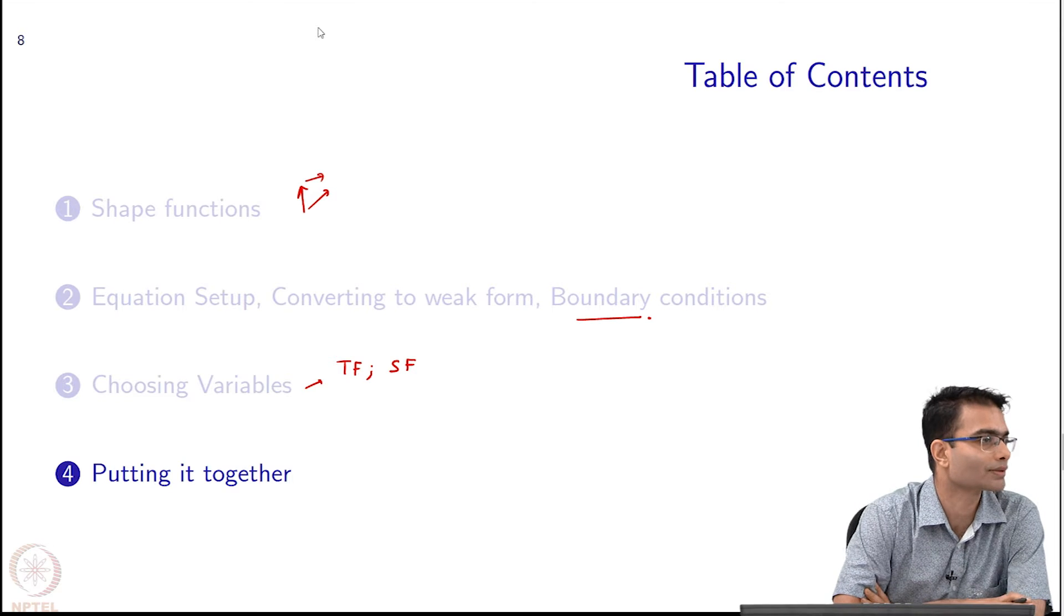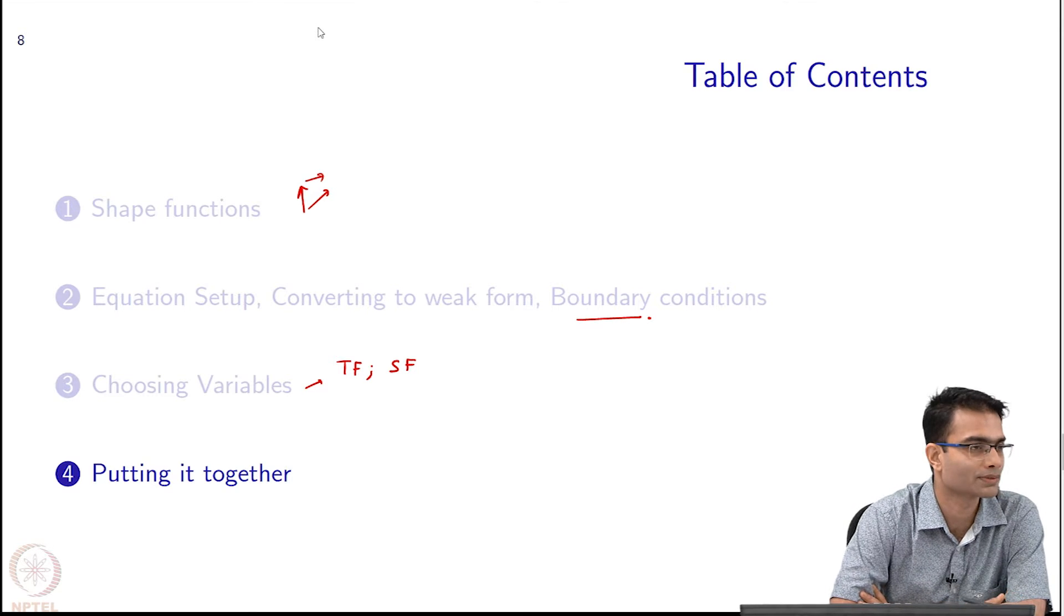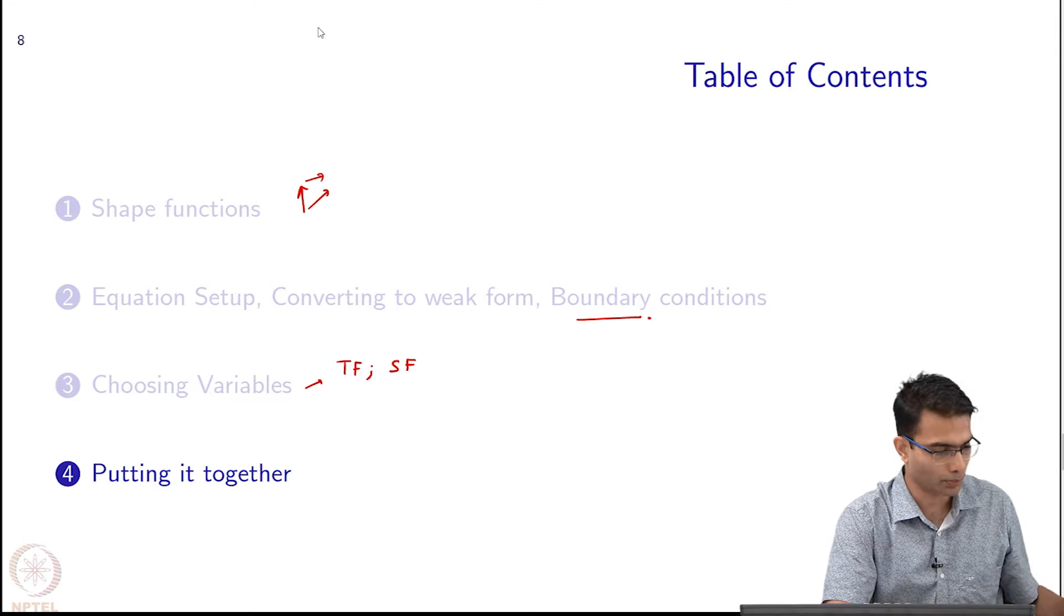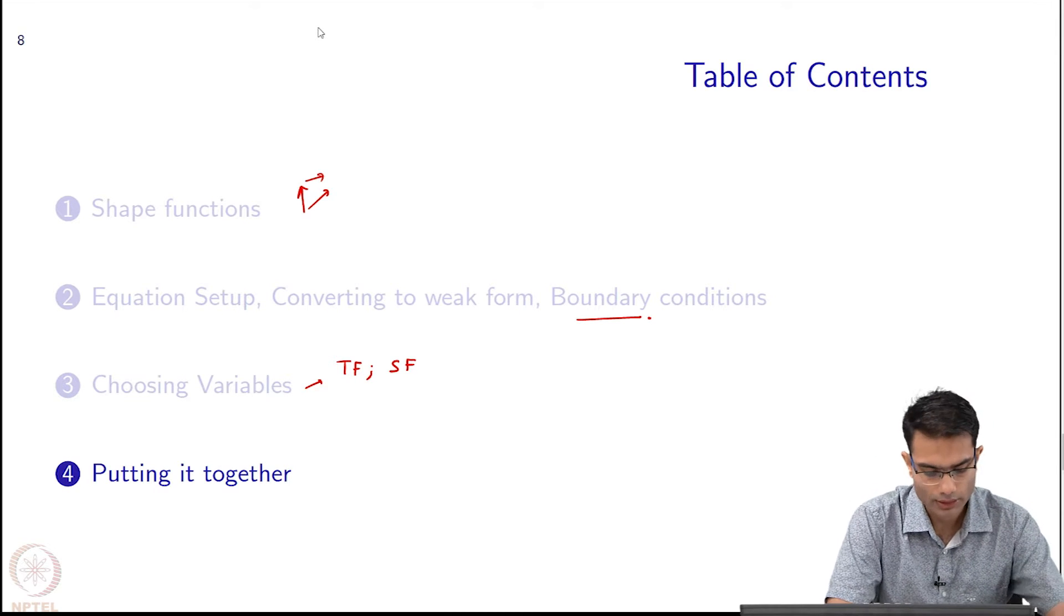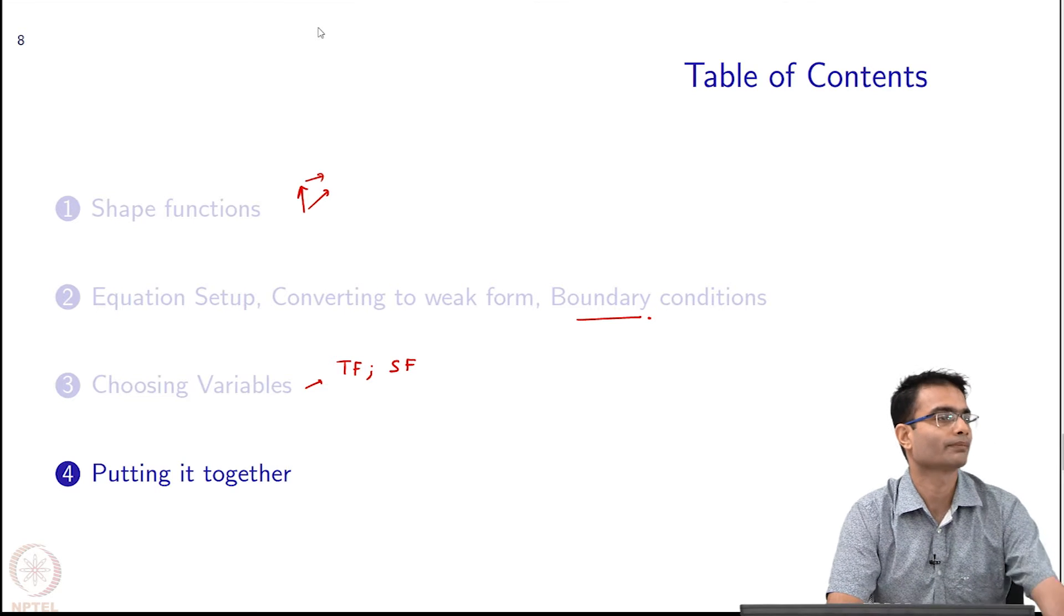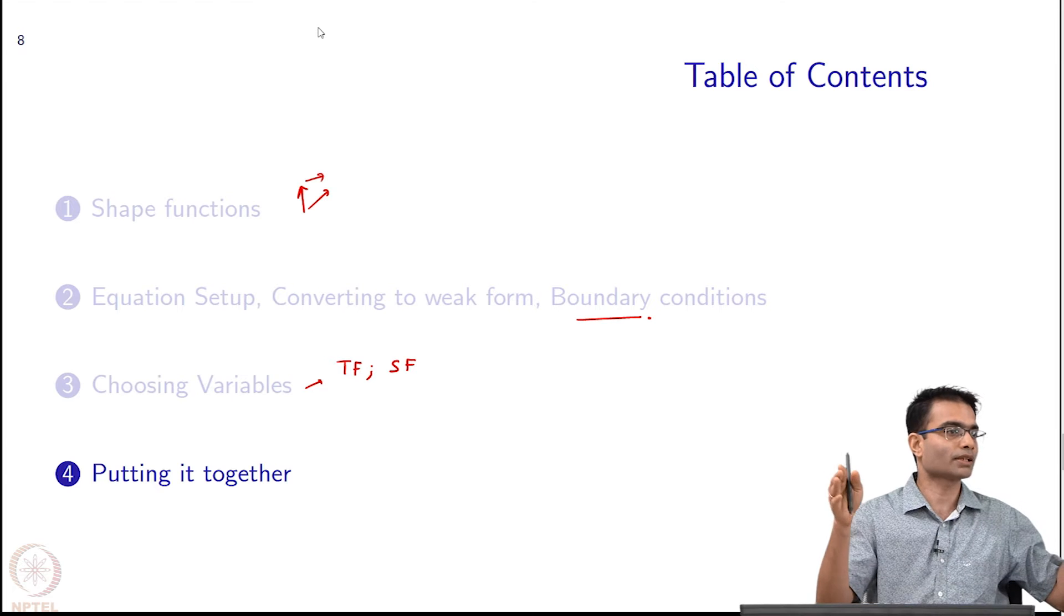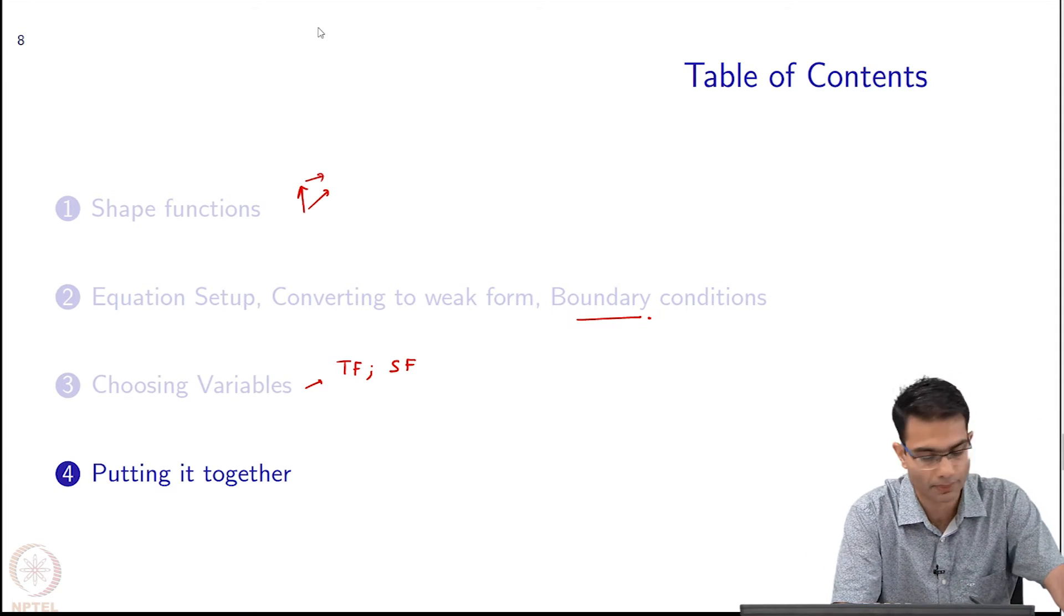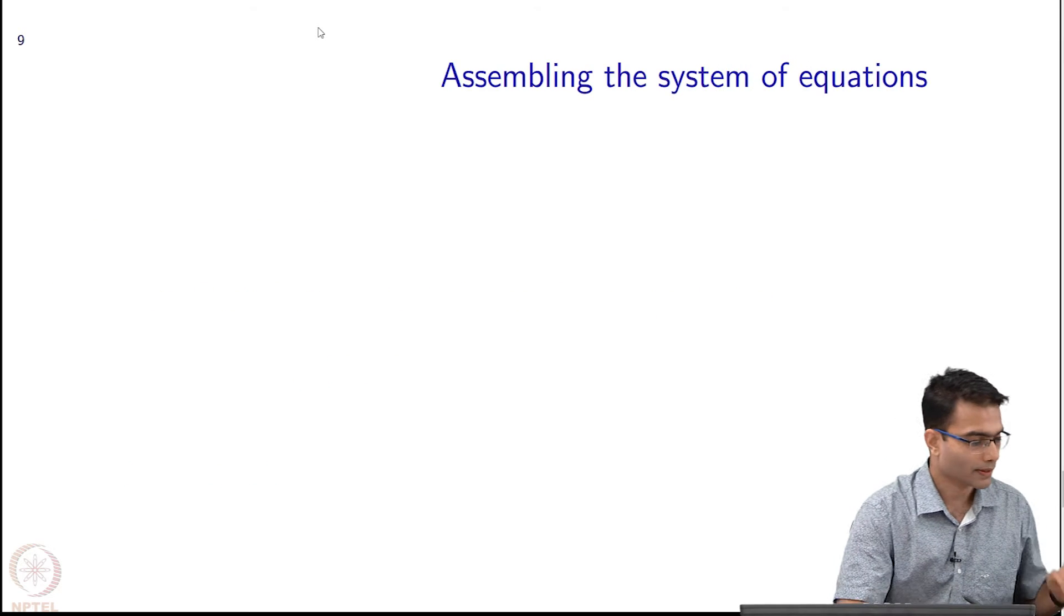The final step is to show you how to put it all together into a system of equations. At the end of the day we want A x equals B, a linear system of equations which we can solve. Let us try to put it together. What we will do is very similar to what we did in the case of 1D FEM - we took a line, chopped it into elements, and found the system of equations.